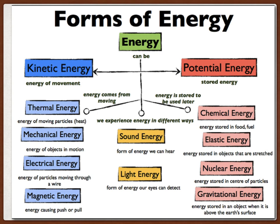As you can see, these are the forms of energy. We have kinetic energy as well as potential energy. We also discuss thermal, mechanical, electrical, and magnetic, as well as different types of potential energy such as chemical energy, which is stored in food, elastic energy, nuclear energy, and gravitational energy.